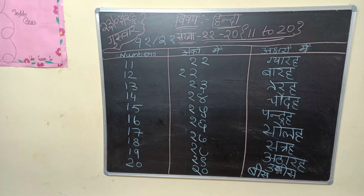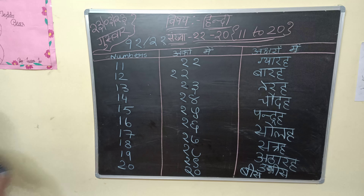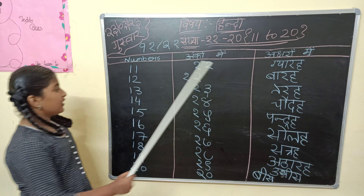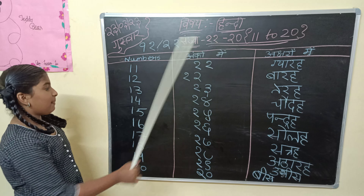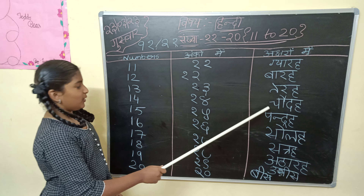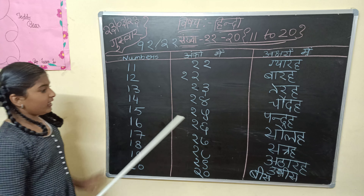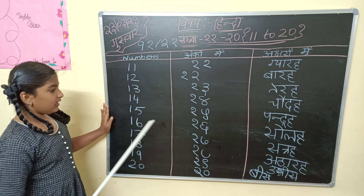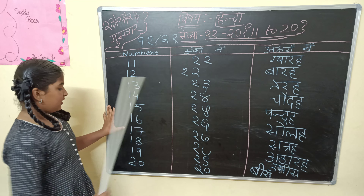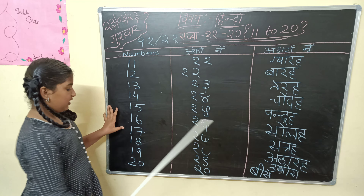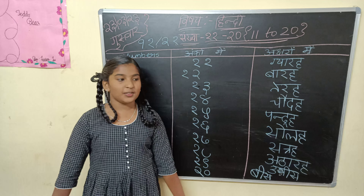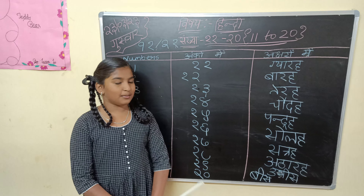I'll repeat the words. 11, 12, 13, 14, 15, 16, 17, 18, 19, 20. Thank you for watching, hope you all understood the numbers.